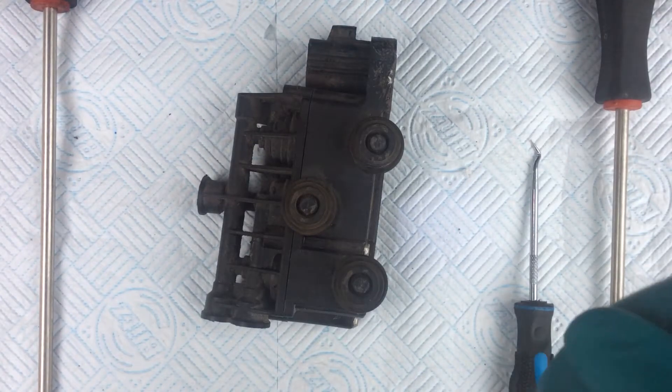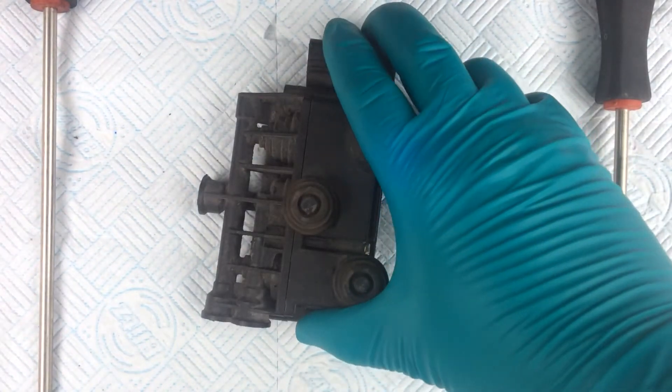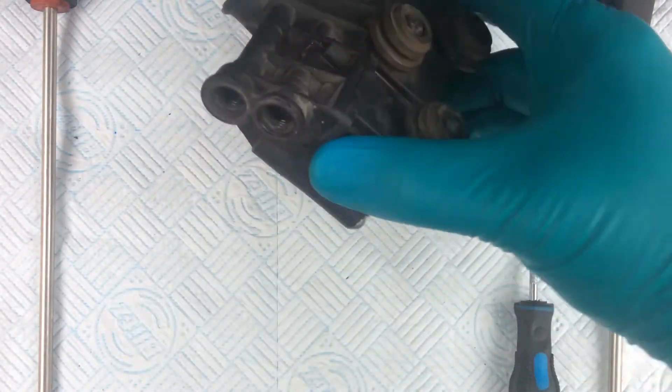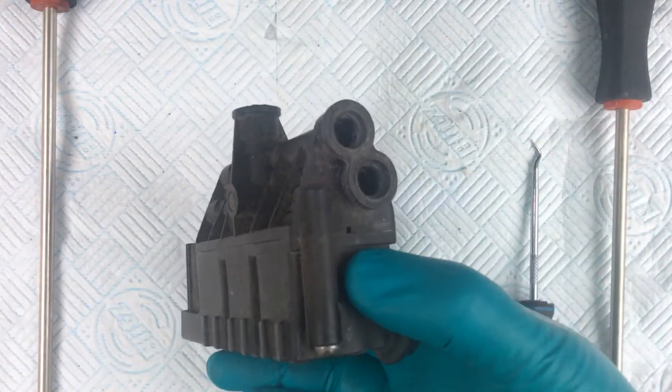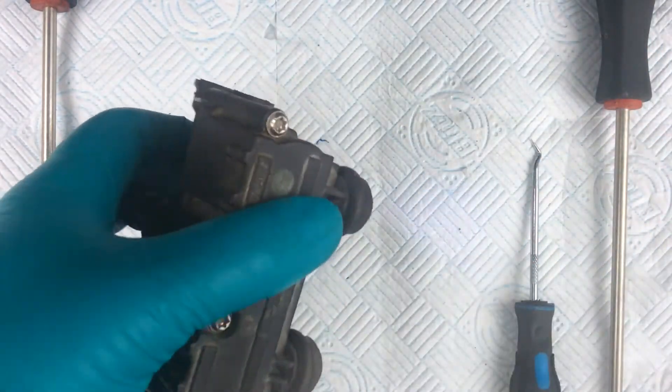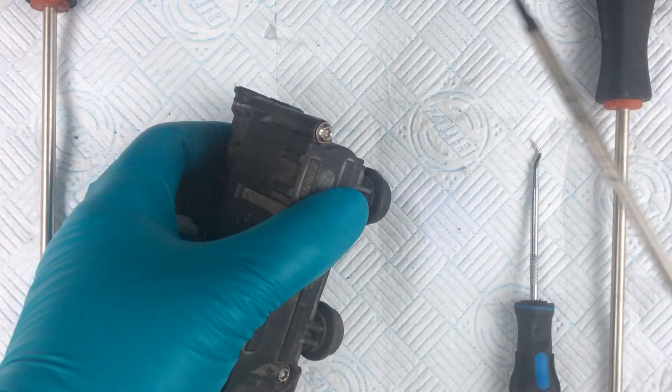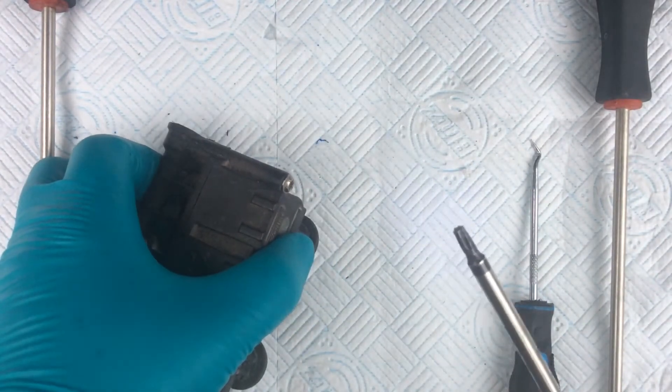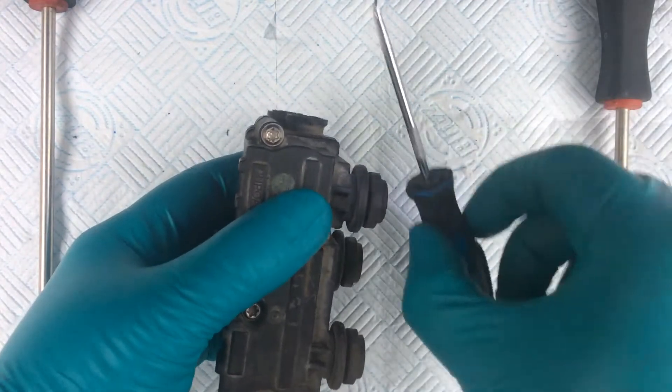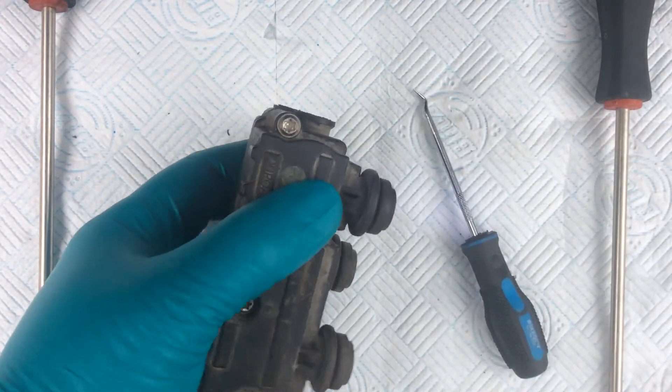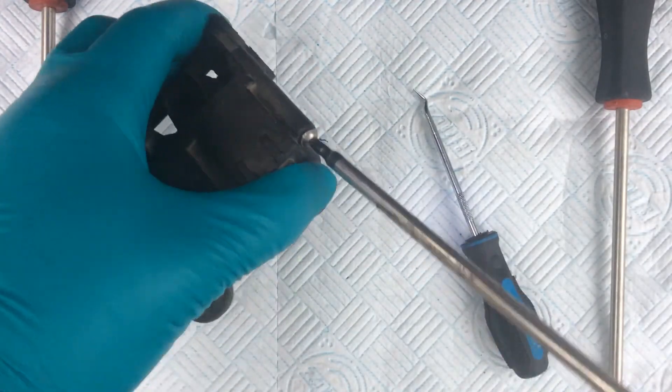So this is a front valve control block for suspension on a Land Rover Discovery 3 and a Range Rover Sport. All I'm using today is a T20 bit for the screws and a device for removing seals.